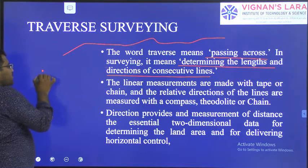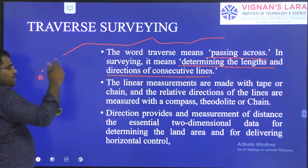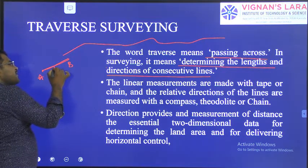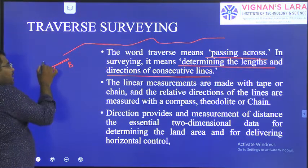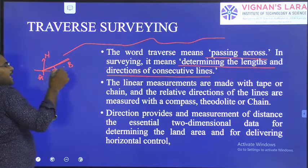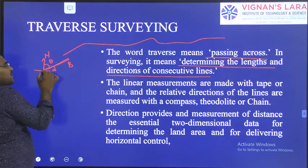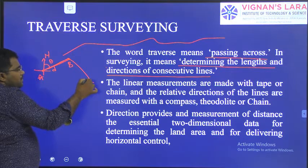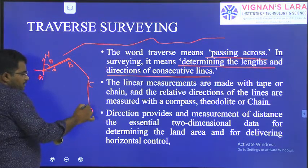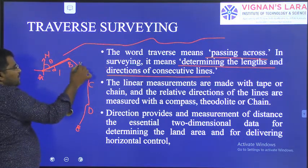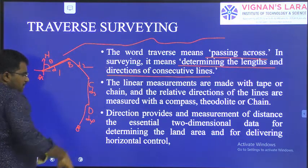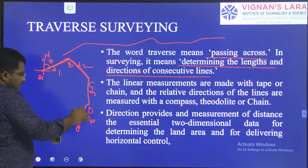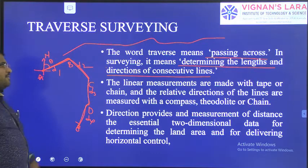For example, if you are starting your instrument at point A and moving to point B, you measure that distance. You also take the angle value with respect to north direction. Then from B you move to C, from C to D, from D to E — with distances D1, D2, D3, D4 measured along the way. Moving continuously like this is called a traverse.